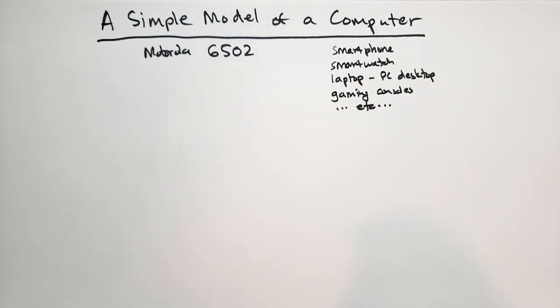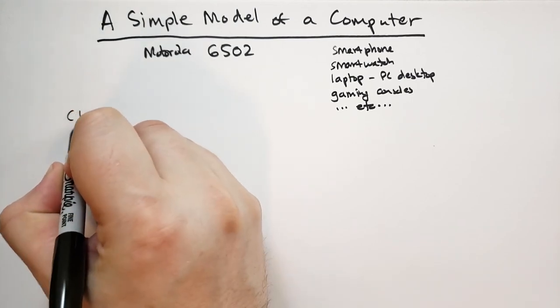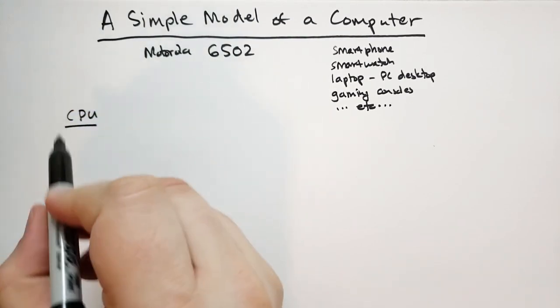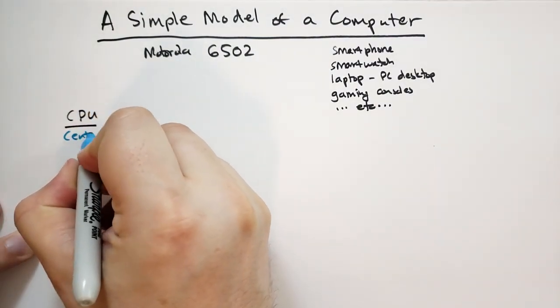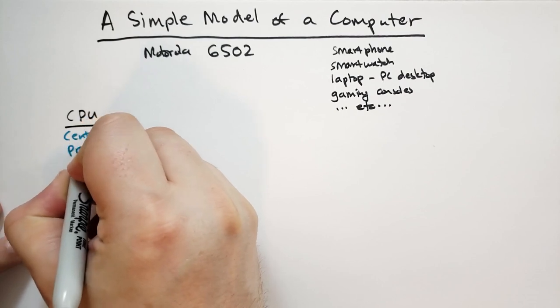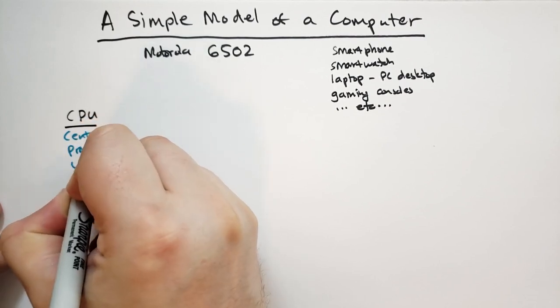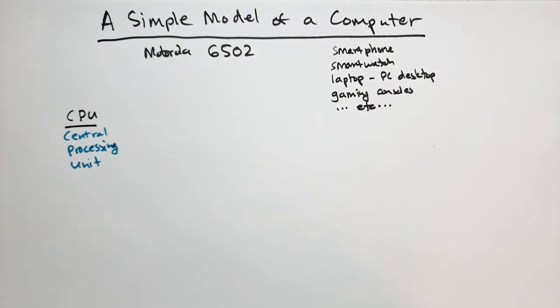All right. So the simple model of a computer is going to work like this. We have what's called a CPU, and that stands for Central Processing Unit. It is a chip.